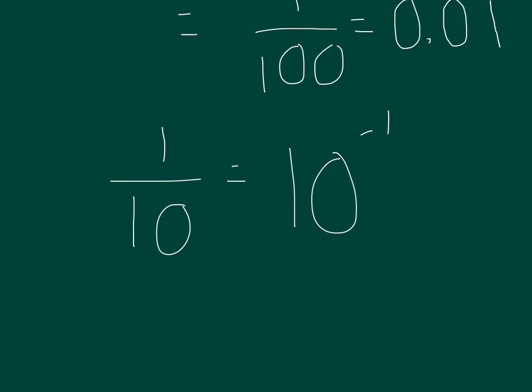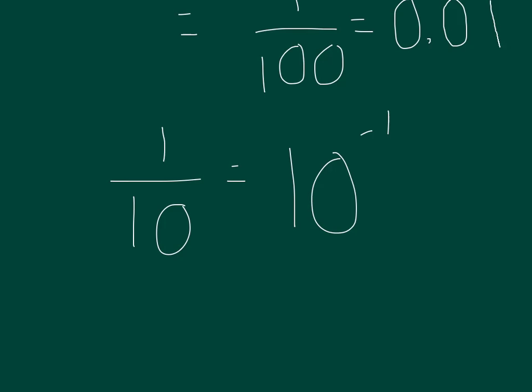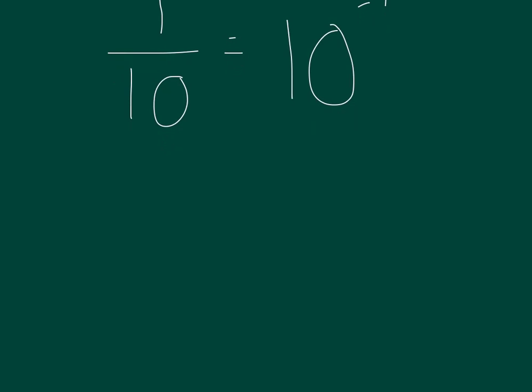Question 1. A fly can beat its wings once every 10 to the power of negative 3 seconds, or once every one-thousandth. Okay, what does that mean? Well, it means a fly can beat its wings very, very fast.